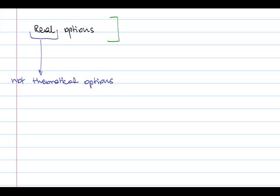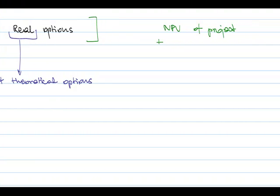Real options have value because we can put a value on them using the Black-Scholes formula. If you have an NPV of a project but also have some real options — for example, if something goes wrong you can sell the factory or sell a license within that factory — then you can increase the net present value by the value of those real options. You can only increase the NPV if it is a real option, something you can truly do.